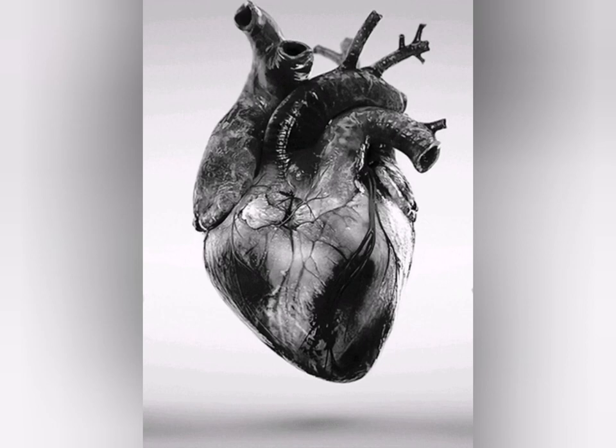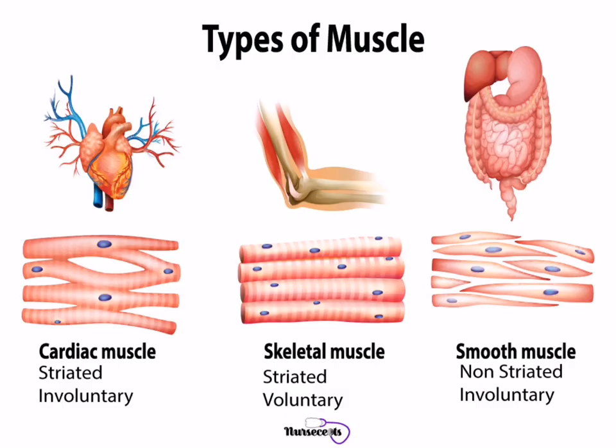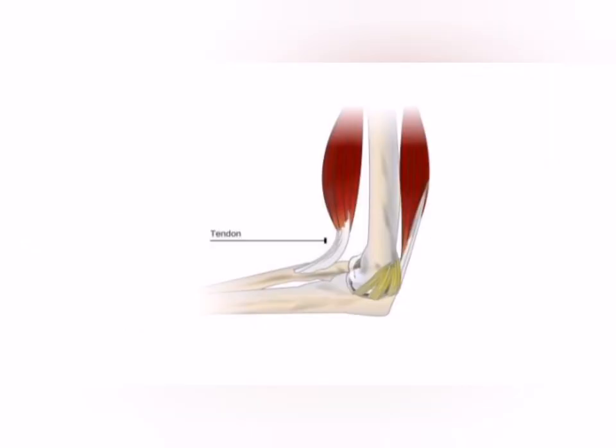Now we will see the types of muscles. There are three main types of muscles in the human body: number one, skeletal muscles; number two, smooth muscles; and number three, cardiac muscles. The skeletal muscles are attached to your bones by fibers known as tendons.